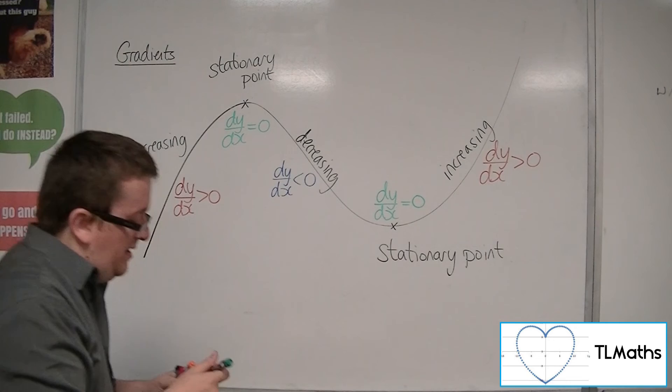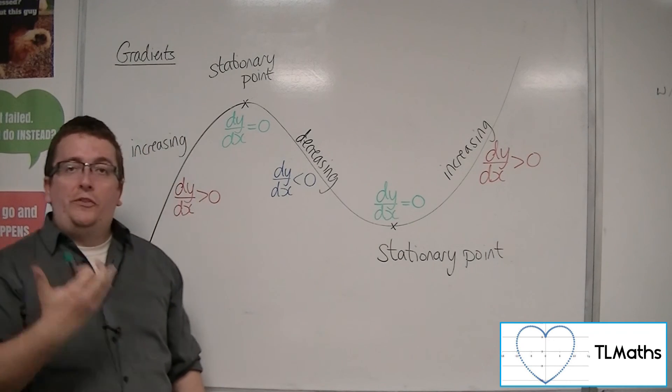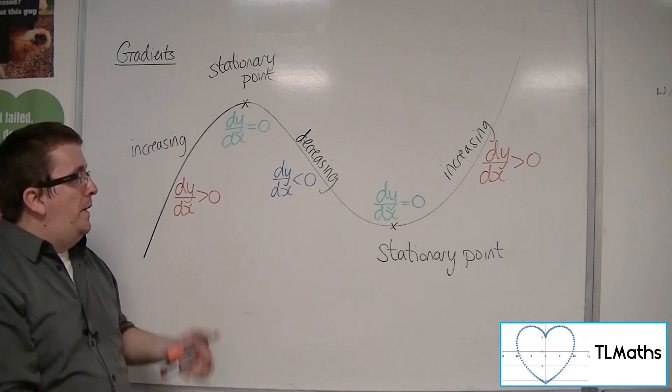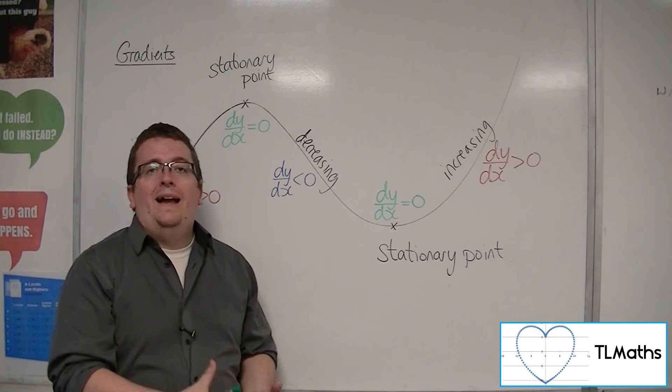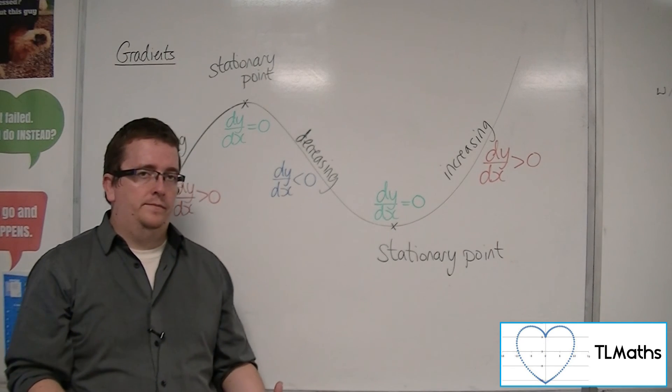So if you could solve the equation of dy by dx is equal to 0, you could find where the curve has its stationary points, where its turning points are.